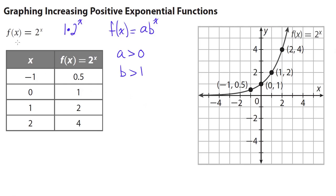Looking at the table of values for f of x equals 2 to the x power: when x is negative 1, we get 2 to the negative first power, which is the reciprocal of 2, equal to one half or 0.5. Anything to the 0 power is 1, so 2 to the 0 is 1. Two to the first is 2, and 2 squared is 4. These points — negative 1 comma 0.5, 0 comma 1 (the y-intercept), 1 comma 2, and 2 comma 4 — form this curve.